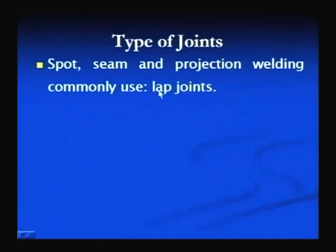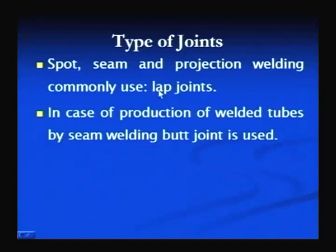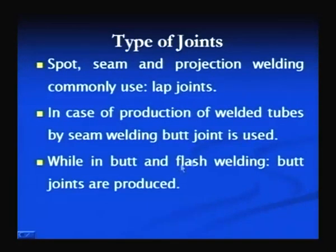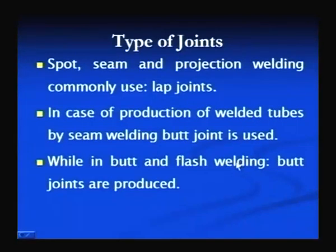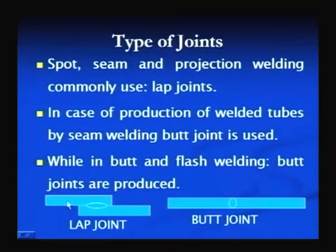The different types of joints produced by resistance welding processes like spot, seam, and projection welding — the most common is the lap joint. However, butt joints can also be produced in some cases, like in production of welded tubes by seam welding or in butt and flash welding processes for joining rods where ends are butting together. In the lap joint, one plate overlaps another and the joint is formed at the interface. In the butt joint, ends are touching each other, aligned, and then the joint is formed between them.